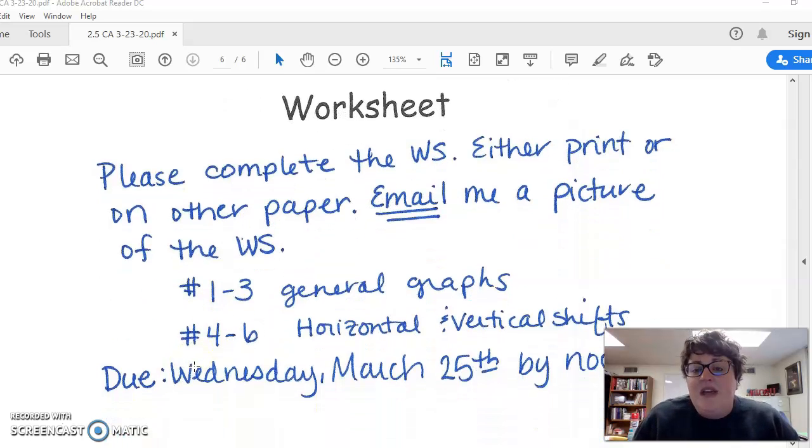Please complete the worksheet. You can either print it out or just use another piece of paper. Graph those for me, then email me a picture of the worksheet—just take a picture with your phone. Problems one through three are general graphs. Four through six are the horizontal and vertical shifts—does the graph open up or down? This is due Wednesday, March 25th by noon.